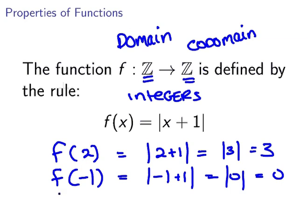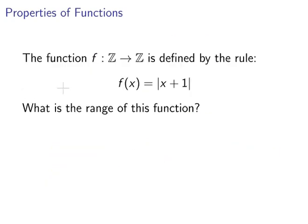F of minus 2, I'll just give the answer to this one. We would get the absolute value of minus 1, that is equal to 1. So there's a few evaluations for various values of the domain. We would have 3, 0 and 1 corresponding to 2, minus 1 and minus 2. So what is the range of this function?